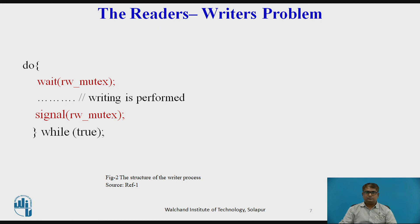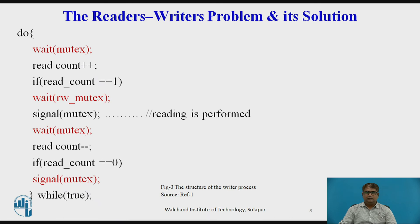The code for the writer process is shown in the figure. The readers-writers problem and its solution have been generalized to provide reader-writer locks on some systems. Acquiring a reader-writer lock requires specifying the mode — either read or write access. When a process wishes to only read shared data, it requests the lock in read mode. A process wishing to modify the shared data must request the lock in write mode.